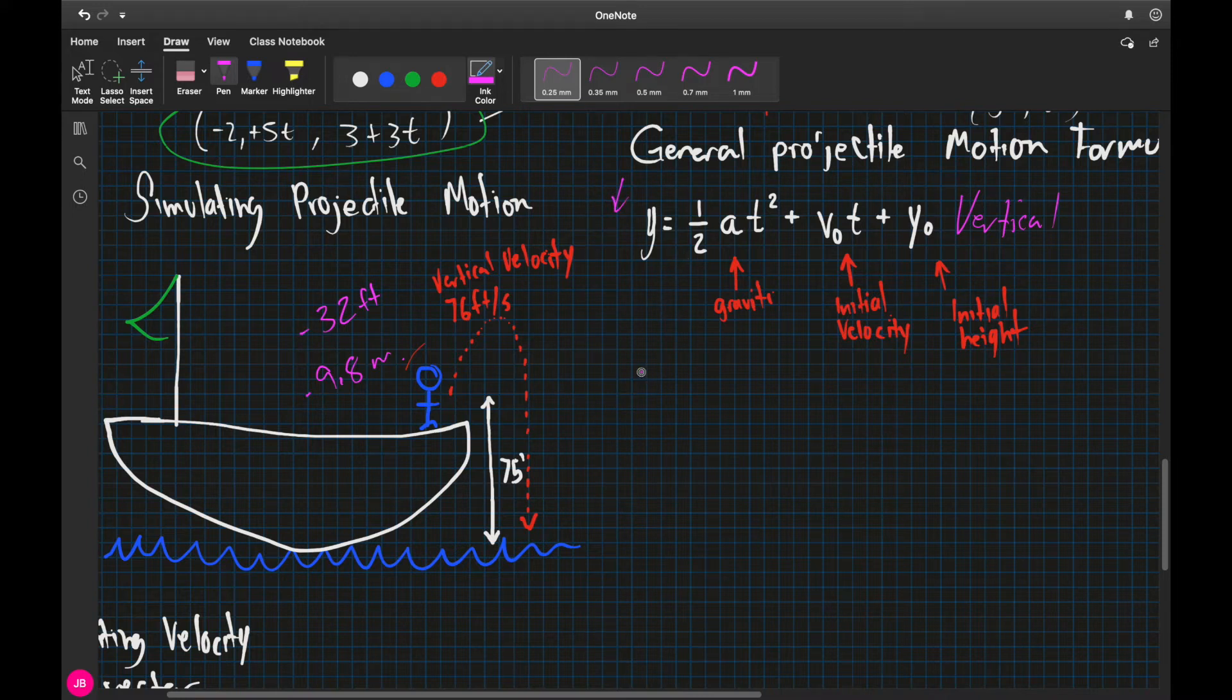So what we're going to do is we're going to say, well, y has to be equal to half of 32, half of negative 32, which is going to give us negative 16t squared. And that's pretty much going to stay the same for any projectile motion problems that you have that deals with gravity.